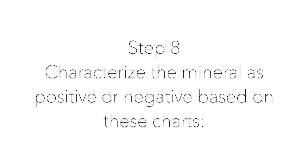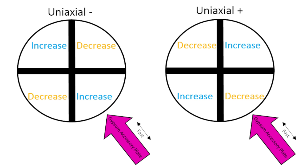Step 8: Characterize the mineral as positive or negative based on these charts. If the mineral is uniaxial negative, the fast ray of the accessory plate will cause an increase in retardation and interference colors in the direction it is inserted. If the mineral is uniaxial positive, the fast ray of the accessory plate will cause a decrease or less of an increase in retardation and interference colors in the direction it is inserted. Since we saw more of an increase in the northeast southwest quadrants, this mineral is uniaxial positive.